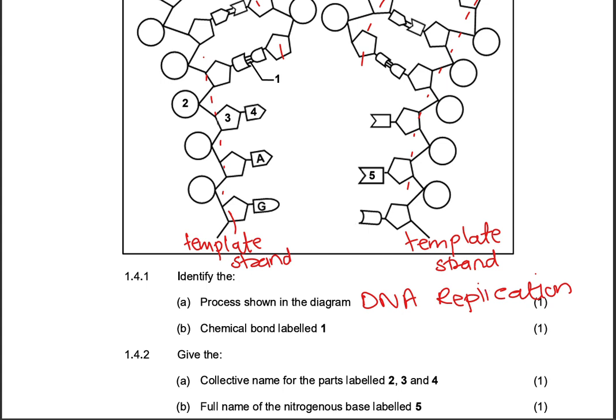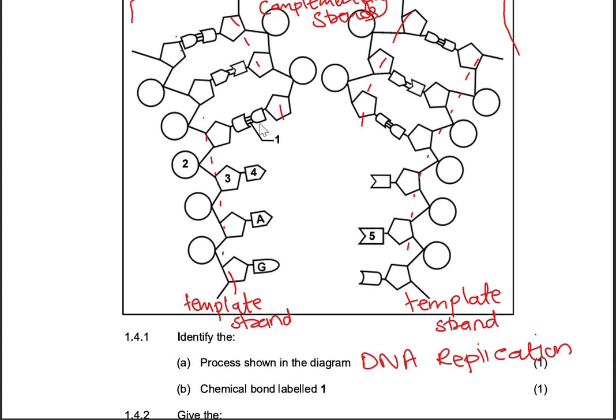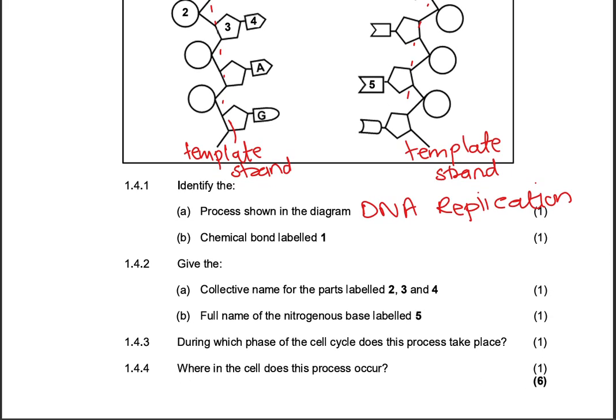Then 1.4.1b, identify the chemical bond labeled 1. So let's check it out. There is the chemical bond labeled 1. This is the bond that we find pairing the bases, between the nitrogenous bases. So that is our hydrogen bond.